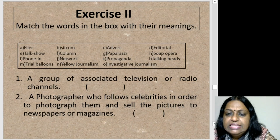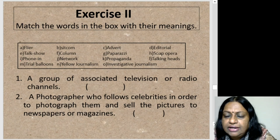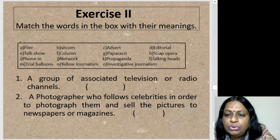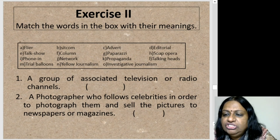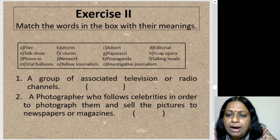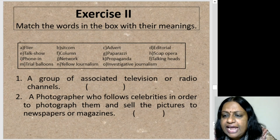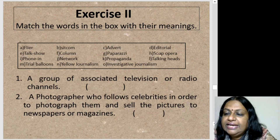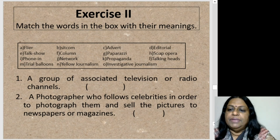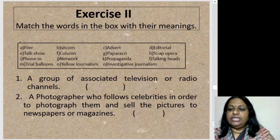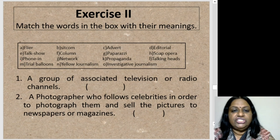The words from the media box are: A — Flyer, B — Sitcom, C — Advert, D — Editorial, E — Talk show, F — Column, G — Paparazzi, H — Soap opera, I — Phone-in, J — Network, K — Propaganda, L — Talking Heads, M — Trial Balloons, N — Yellow Journalism, O — Investigative Journalism. Most of these words we must have heard in some context or the other. Let's read the sentences and find the appropriate words from the box.